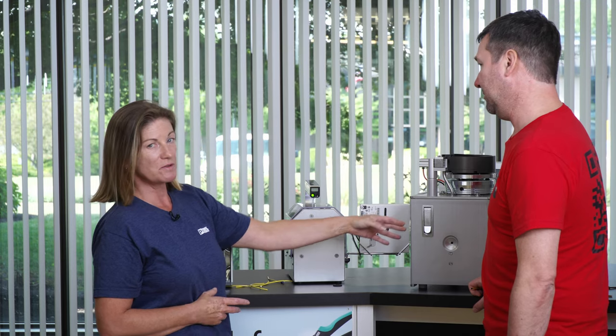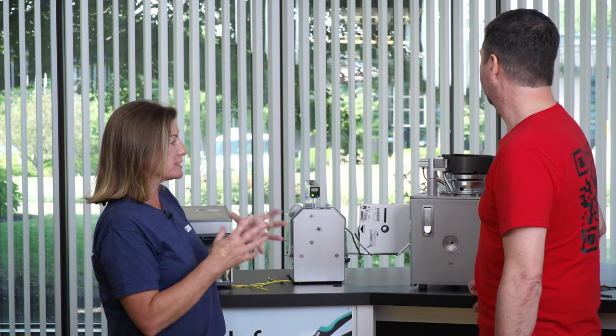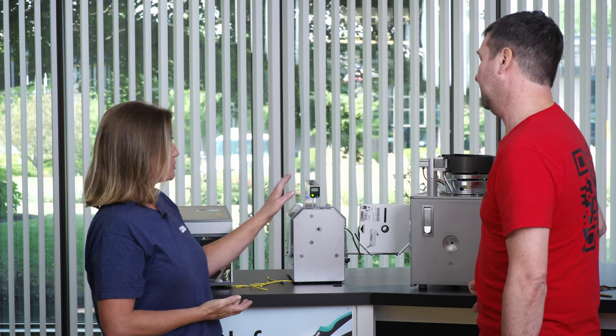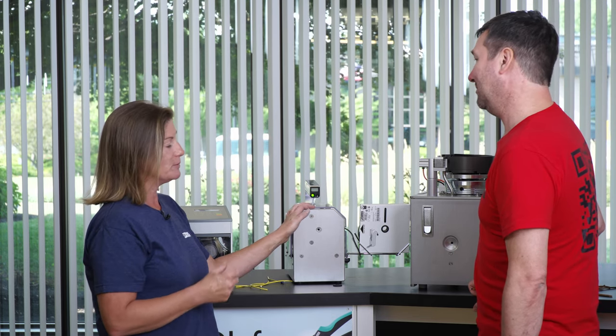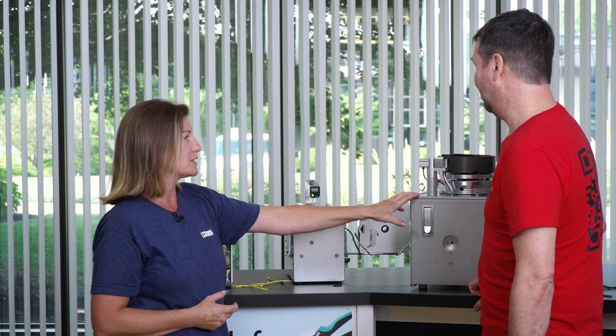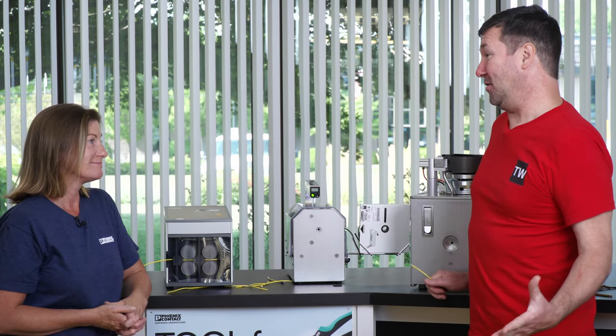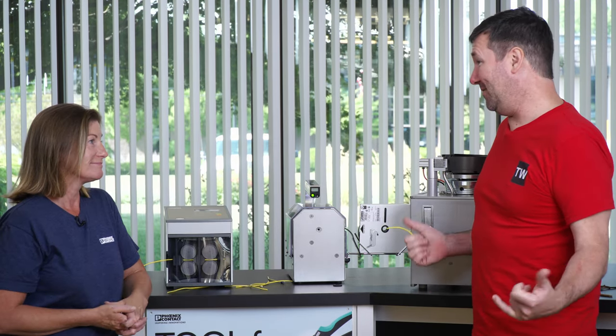The CF1000 will do a strip only, but it does strip and crimp with ferrules. Your CF3000 is limited to an eight millimeter strip length on the barrel. This guy would do six, eight, 10, and 12. What if I'm using large ferrules or I need a lug? Do you got anything for that? I do.